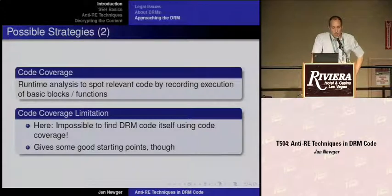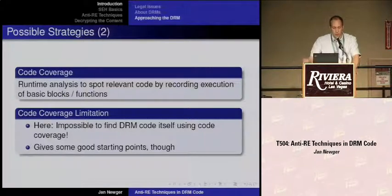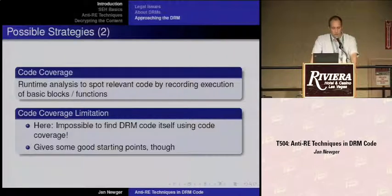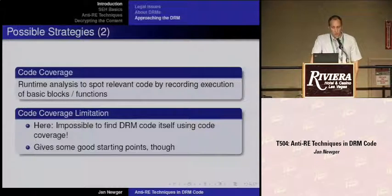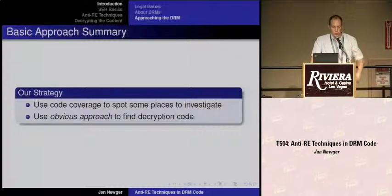A likely strategy would be to use code coverage — letting the program run while recording execution of basic blocks or functions, recalling all breakpoint hits and doing calculations with the sets. You would ultimately find DRM-related code pretty easily. Due to a few anti-reverse engineering techniques, code coverage is not fully possible in this case, but it gives some good starting points. Our strategy is to use code coverage and employ debug registers and hardware breakpoints to find the decryption code.